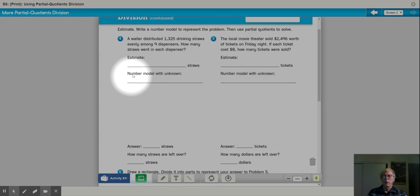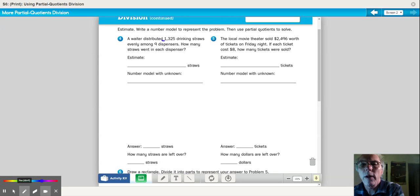So first off we're going to do an estimate. We're going to write down, we're going to round off some numbers here. Important information: 1,325 drinking straws, nine dispensers. Let's round 1,325 to 1,300. Love those zeros. And let's round nine to, shockingly, ten. So what times ten would equal 1,300? Well, thirteen times ten would be 130. So a hundred and thirty times ten would be 1,300. So our answer should come up to be something like 130 or close to it.